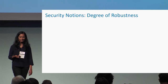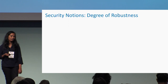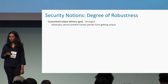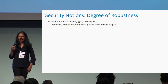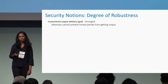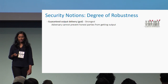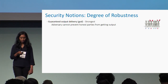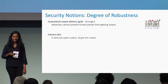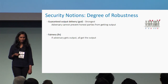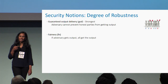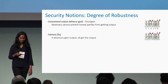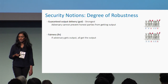MPC has been studied for a range of security notions classified based on the degree of robustness of the protocol. The strongest is guaranteed output delivery (GOD): no matter what the adversary does, he cannot prevent honest parties from getting the output — even if some parties are corrupt, everyone is guaranteed to get the output. A slightly weaker notion is fairness: though not everyone is guaranteed the output, it is fair in the sense that if the adversary gets the output, then all parties get the output — an all-or-none situation.